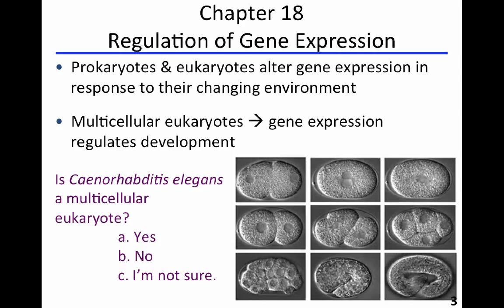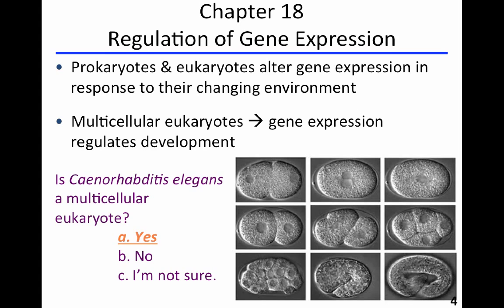Maybe you can recognize what kind of organism is developing in the series of pictures on the right side of the screen. Caenorhabditis elegans is a multicellular animal and it has less than a thousand cells in its whole body. And yet still, each of those cells receives information about what genes to turn on, which genes to express, when, and for how long, in order to develop its entire phenotype.